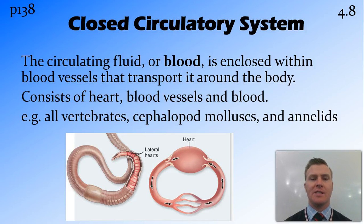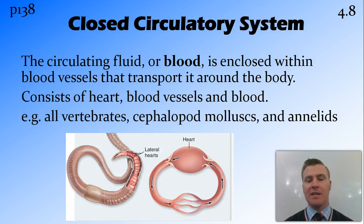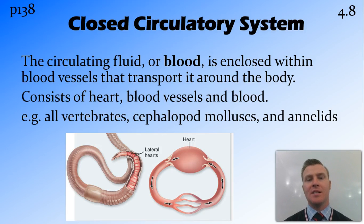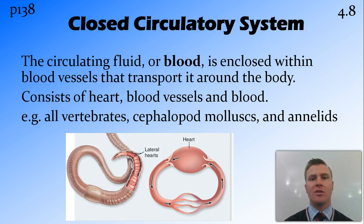A closed circulatory system is what we as humans have. We have a circulating fluid or blood enclosed in blood vessels — so arteries, veins, capillaries — and transported around the body. The system consists of the heart and the blood vessels as well as the blood inside it. The nutrients inside that blood travel across the blood vessels to the interstitial fluid, which is found outside of the blood vessels, so there is a separation between the blood, the circulatory fluid, and the interstitial fluid. Animals that have closed circulatory systems include all vertebrates, some mollusks, and annelids, or worms.